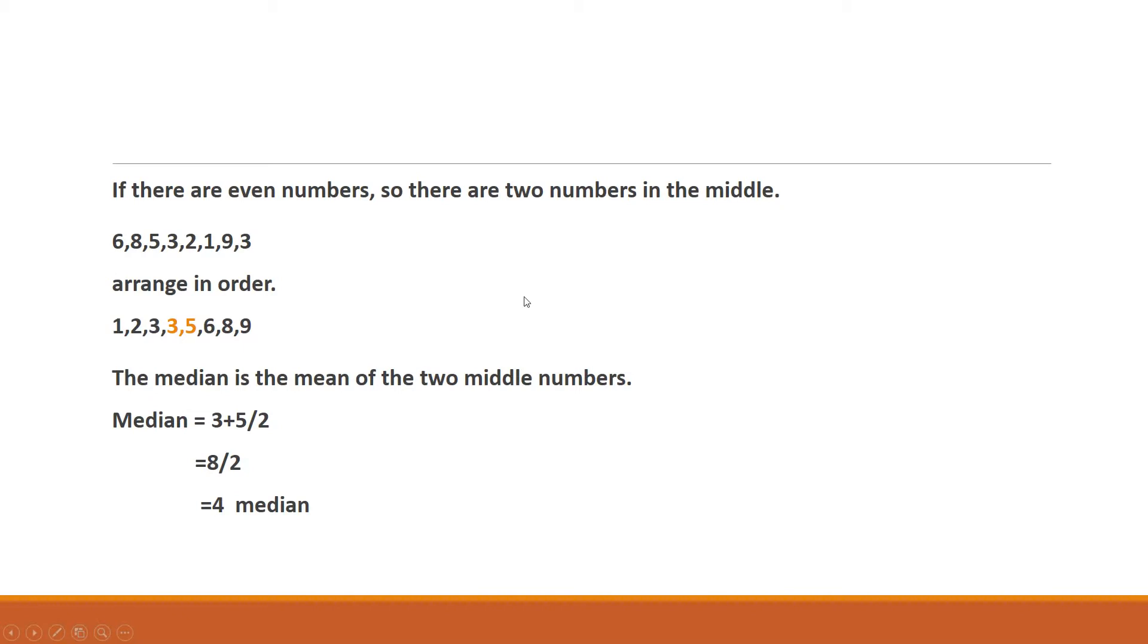If it is an odd number then there will be only one number in the middle. But if there will be even number then there will be 2 numbers, then you have to add 2 numbers and divide it by 2, you will get the answer which is the median.